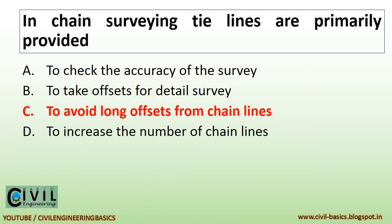In chain surveying, tie lines are primarily provided to avoid long offsets from chain lines.